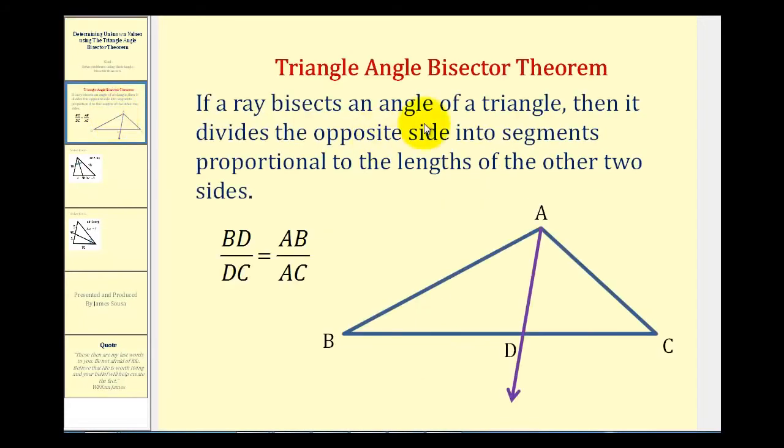The triangle angle bisector theorem states that if a ray bisects an angle of a triangle, as we see here in purple, meaning this angle here is congruent to this angle here,